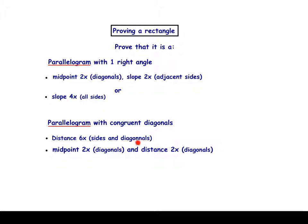Another way to prove you have a parallelogram with congruent diagonals is to use the midpoint formula to get a parallelogram, and additionally the distance formula to get your congruent diagonals. The choice is up to you — you need to find out what you're comfortable with, but you do need to be aware of all the different methods. In most cases, I would suggest using distance six times. It's just easier, and it works out for all of our parallelograms.